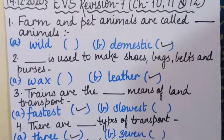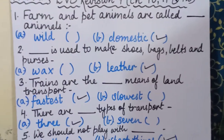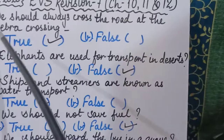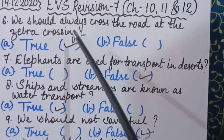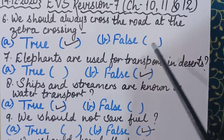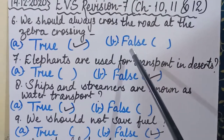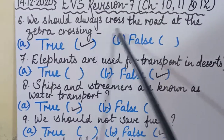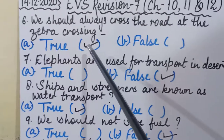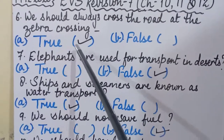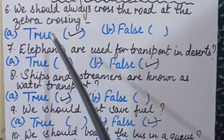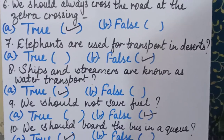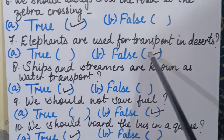The sixth question: 'We should always cross the road at the zebra crossing' — true or false? This is true, as we should always cross at the zebra crossing. The seventh sentence: 'Elephants are used for transport in deserts' — true or false? The correct answer is false.